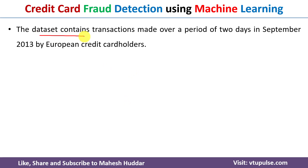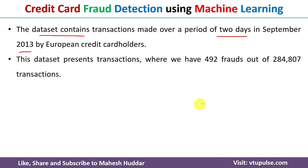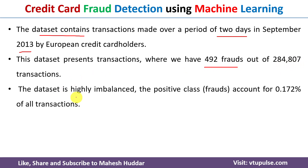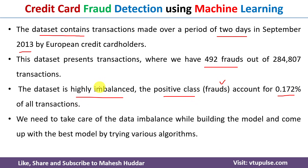To implement the credit card fraud detection technique using machine learning, I will be using a dataset which contains transactions made over a period of two days in September 2013 by European credit card holders. The dataset contains 492 fraudulent transactions out of 284,807 total transactions. The dataset is highly imbalanced as it contains only 0.172 percent of positive class, that is the fraudulent transactions.